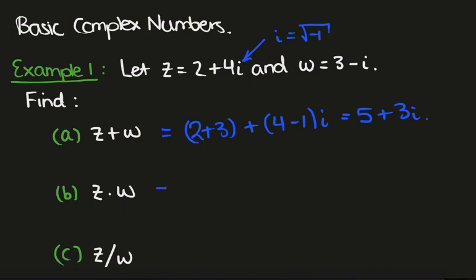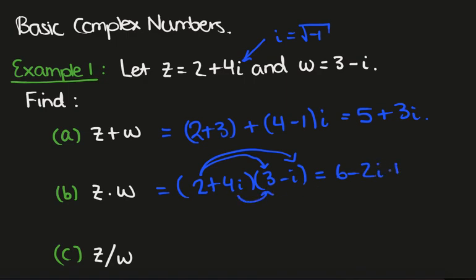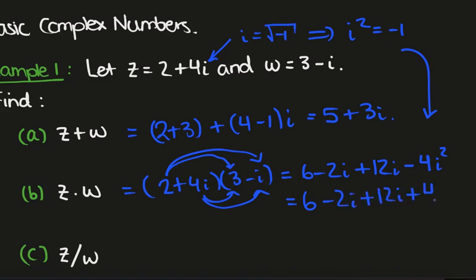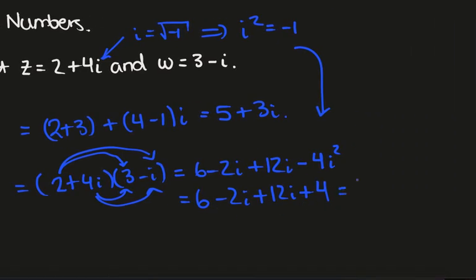Here we have a multiplication. We write out 2 plus 4i times 3 minus i, and then we just expand. So we have 2 times 3 which is 6, then minus 2i, plus 12i, and then minus 4i squared. Since i squared equals minus 1, we get 6 minus 2i plus 12i plus 4. Simplifying, adding the real parts gives 10, and adding the imaginary parts gives 10i, so the result is 10 plus 10i.